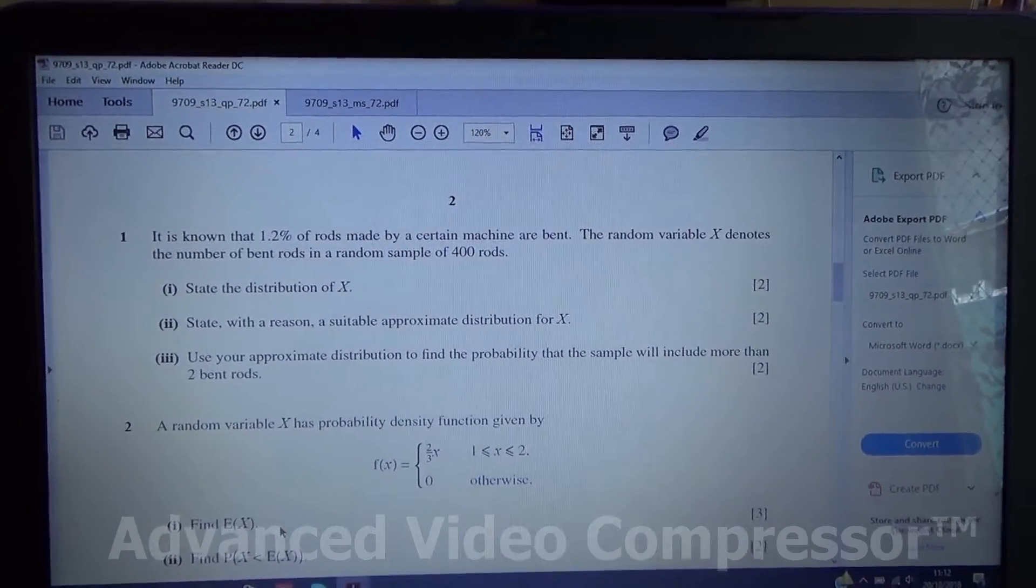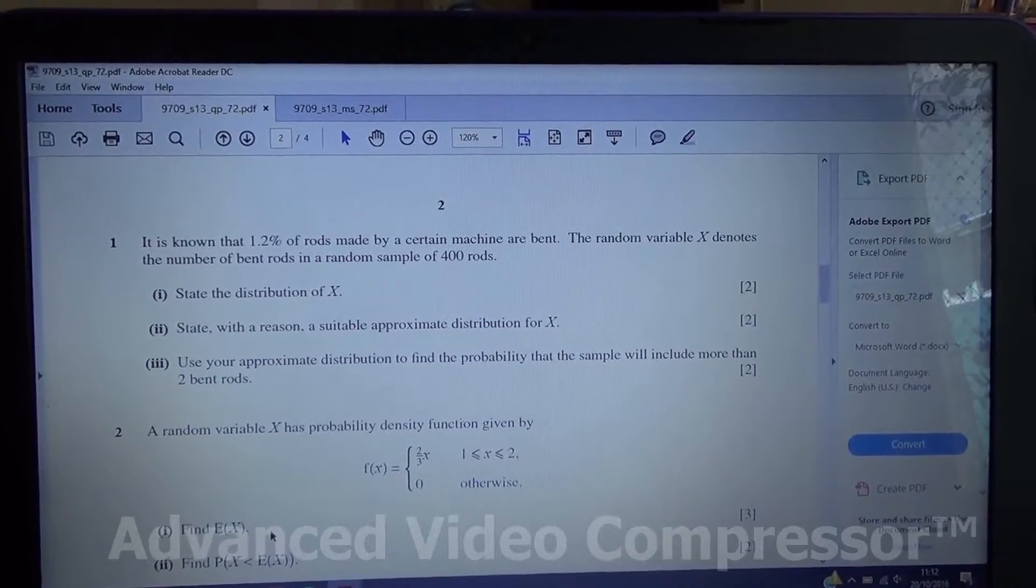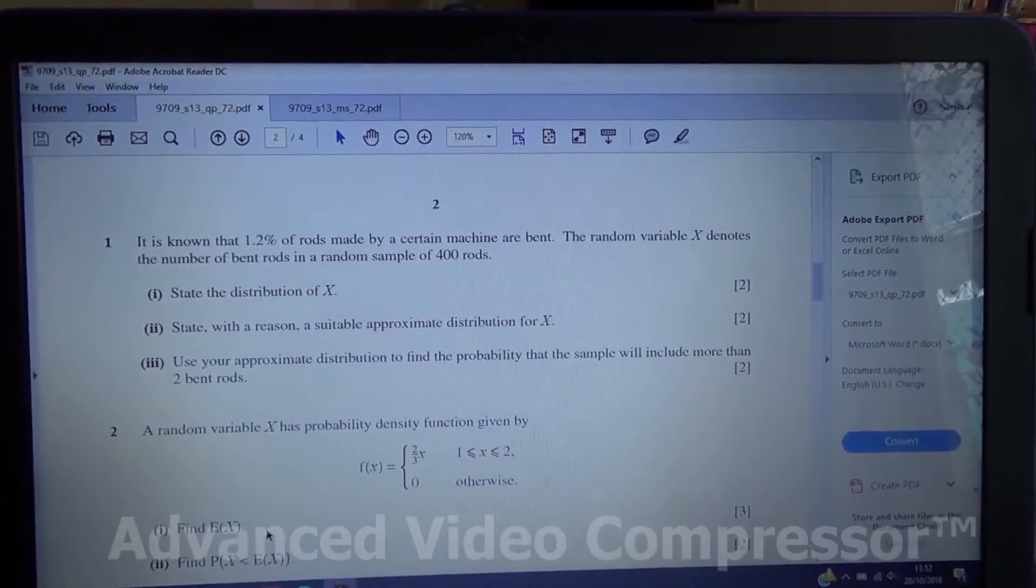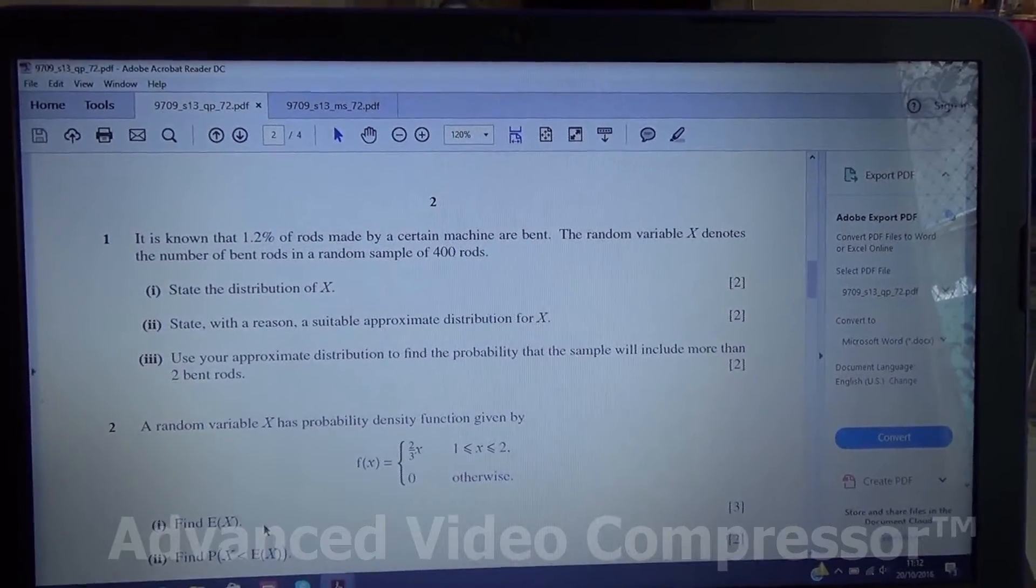Hi, question number 1. It is known that 1.2% of rods made by a certain machine are bent. The random variable x denotes the number of bent rods in a sample of 400 rods.